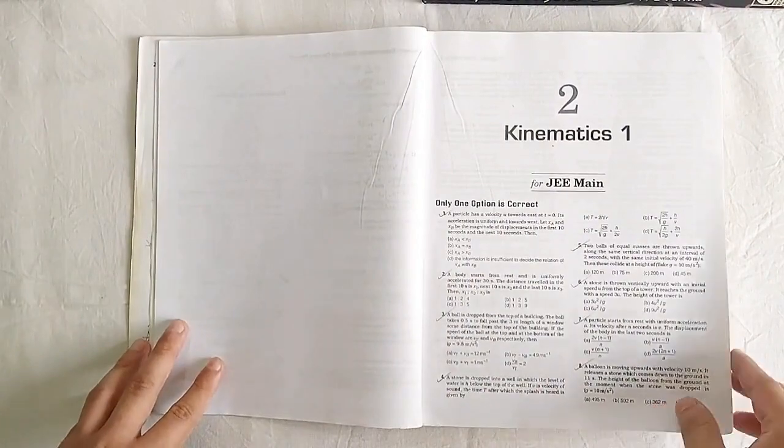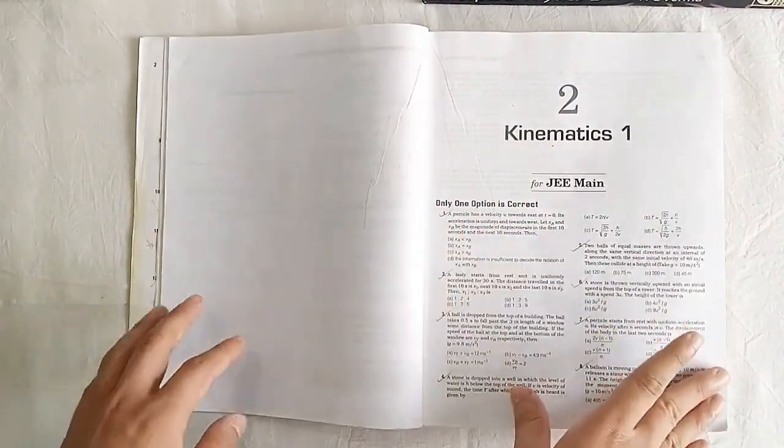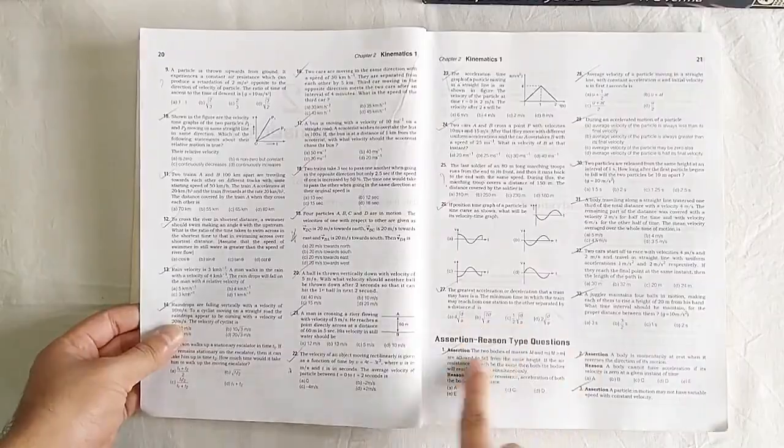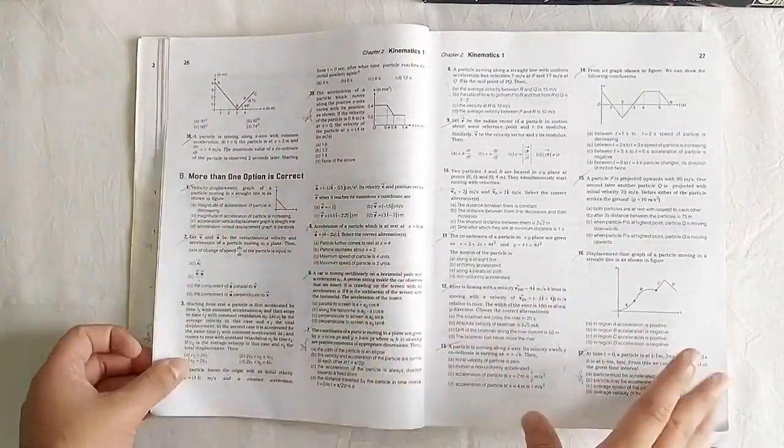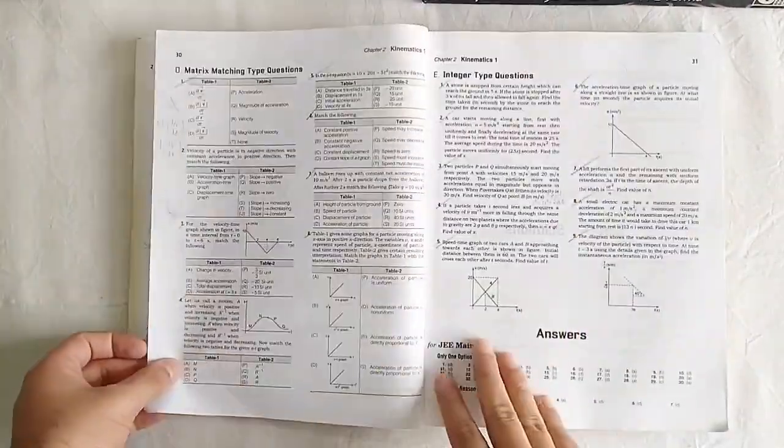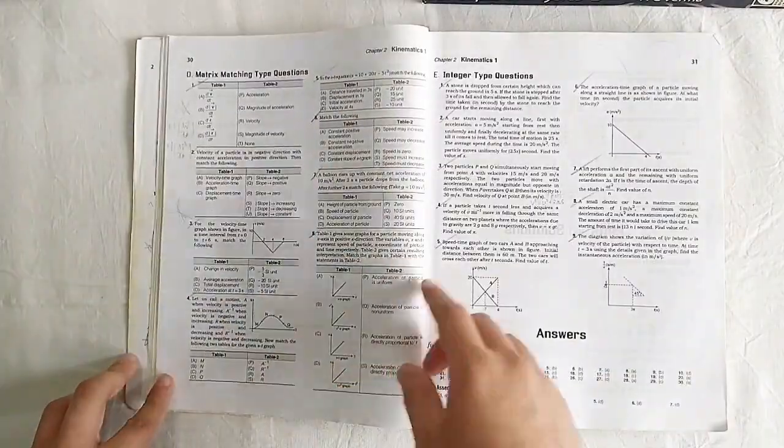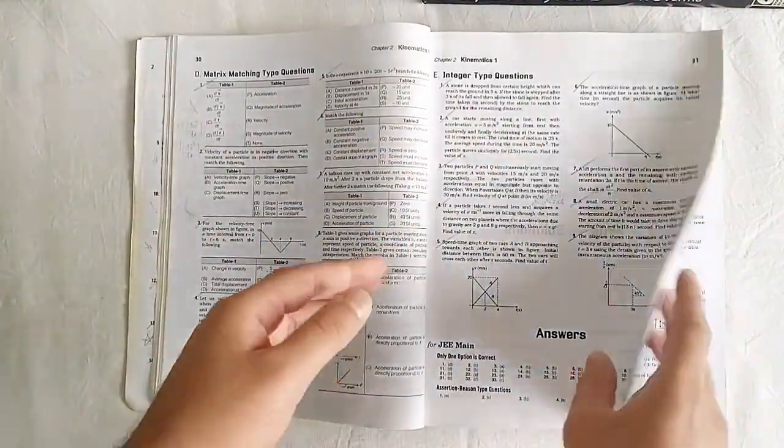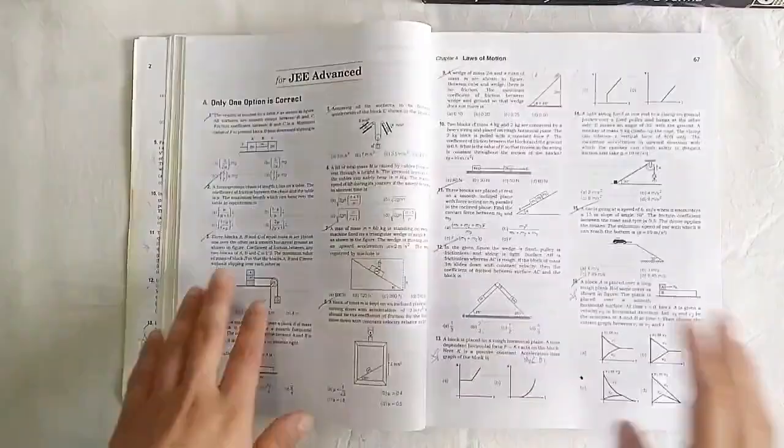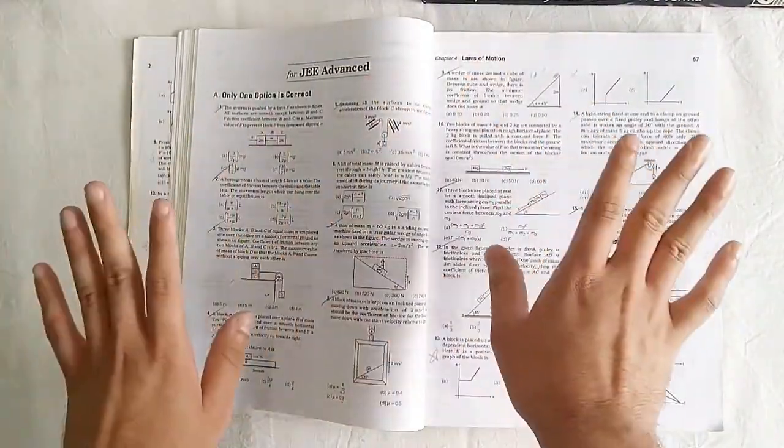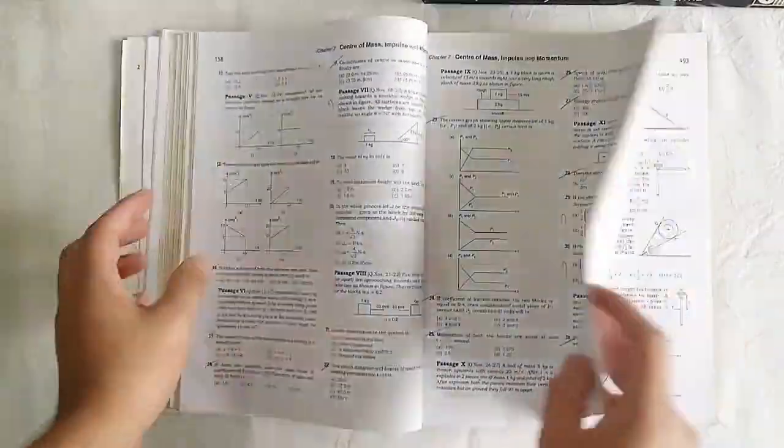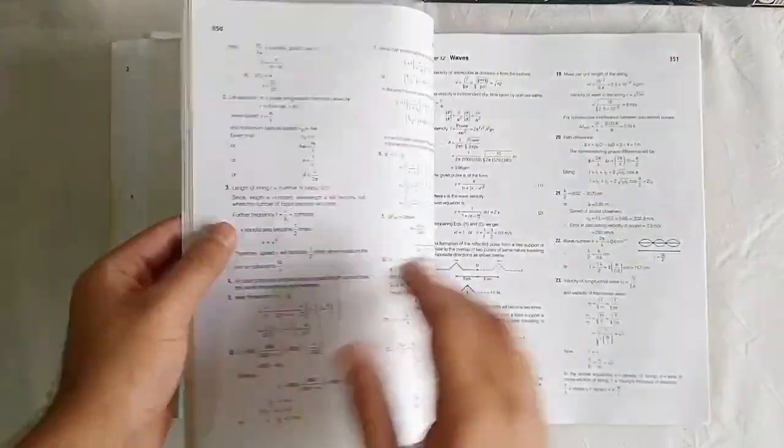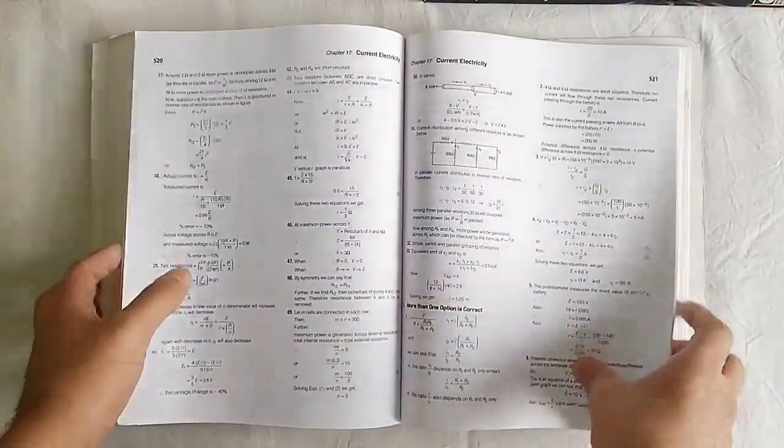This book, I would say, helped me in problem solving because there is a variety of questions and it also helps you solidify your concepts. There is one correct option questions, assertion reason type questions, this is for JEE Advanced, multiple select questions, comprehension type questions, match the following, integer type questions and so on. Although it's full of problems, the font is good and there are a lot of figures and solving it becomes very interesting. This is another book which is actually of the level of 11th and 12th standard.